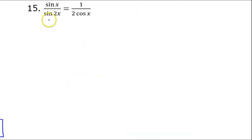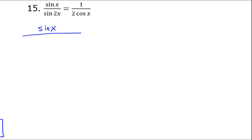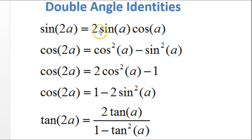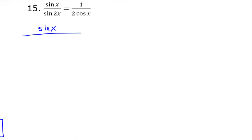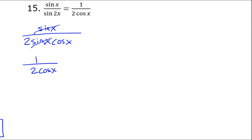Number 15: I see sine of 2x in the denominator, so I'm going to use that to work on the left side. I have sine x over — and the formula for sine of 2x is 2 sine x cosine x — so I have sine x over 2 sine x cosine x. The sine x's cancel out, giving me 1 over 2 cosine x. Well, that was easy.